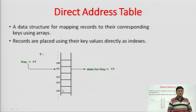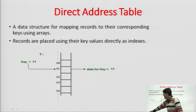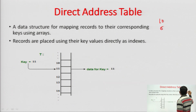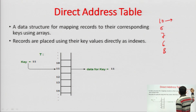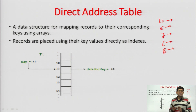Let us discuss the direct address table. For example, if we have some numbers and we have to store them in a table, the storage location of each number will be equal to its magnitude. For example, if we have numbers like 10, 5, 7, 6, 5, 6, 6, and 8, then 10 is stored at index 10, 5 at index 5, 7 at index 7, 6 at index 6, and 8 at index 8. So in direct address tables, the magnitude of the number is the same as its index in the table.